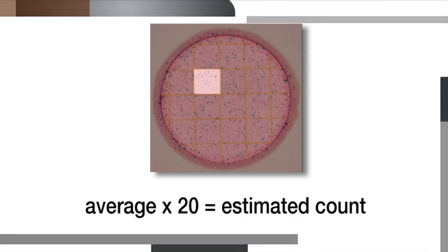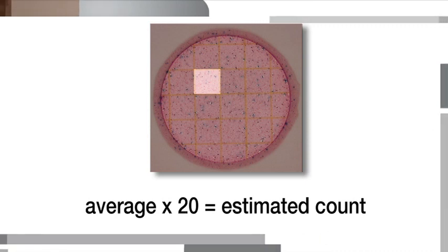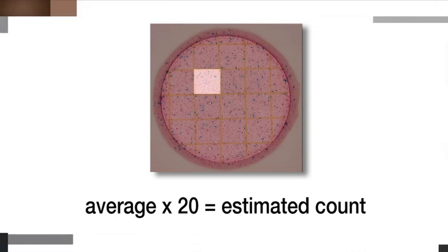To do this, first count the total colonies in one or more representative squares and determine the average number per square. Multiply that number by 20, which is the inoculated area of the plate. The result is your estimated count.